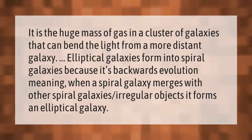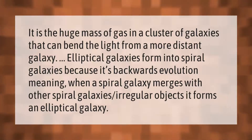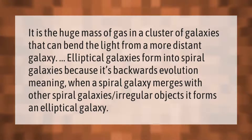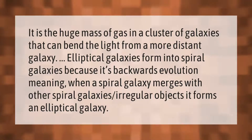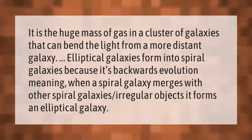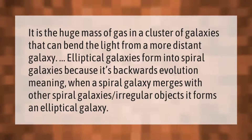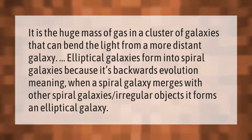It is the huge mass of gas in a cluster of galaxies that can bend the light from a more distant galaxy. Elliptical galaxies form from spiral galaxies — this is backwards evolution, meaning when a spiral galaxy merges with other spiral galaxies or irregular objects, it forms an elliptical galaxy.